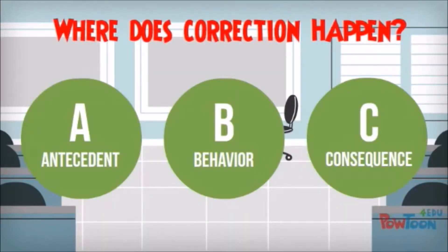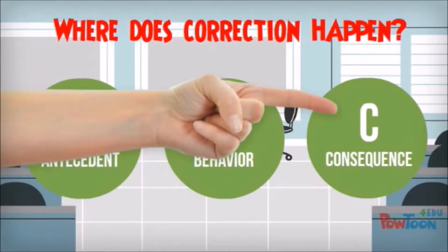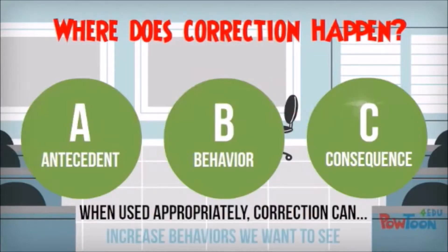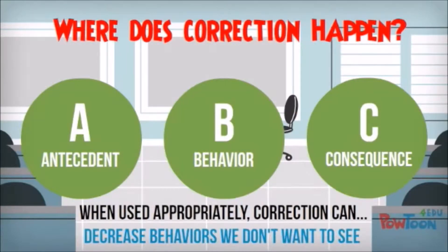Where in this contingency does correction happen? Correction is a consequence. If we use correction appropriately, we can increase the likelihood of behaviors that we want to see and decrease the likelihood of behaviors that we don't want to see.